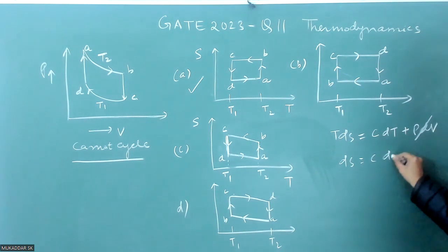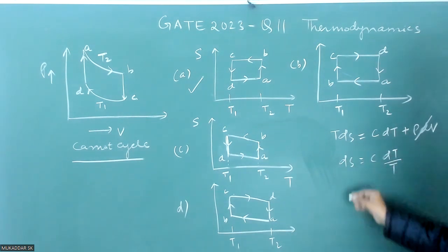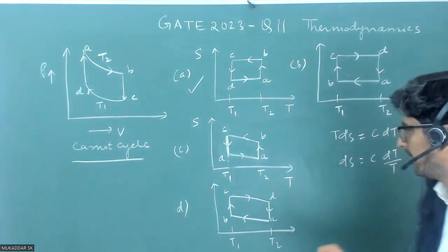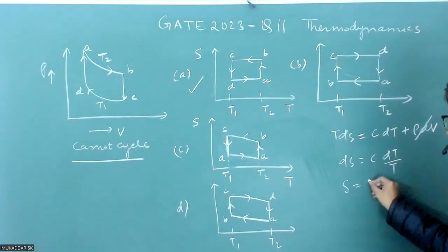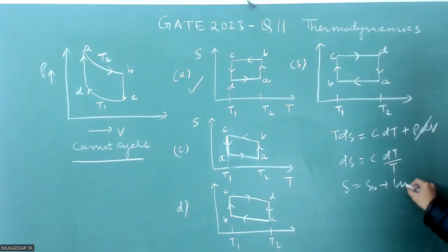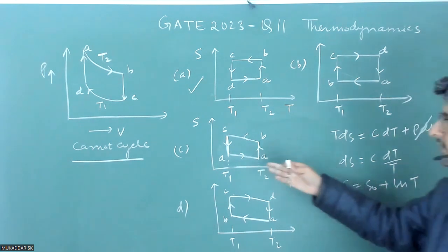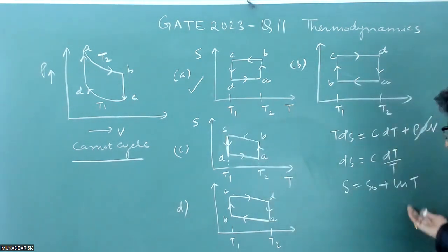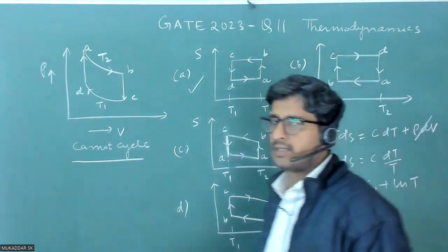So if you see the profile of entropy it will be some S is equal to S0 plus ln of T. So none of the figures look like this logarithmic type so they have made straight lines here.